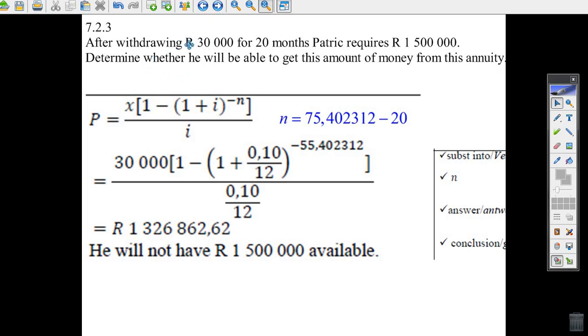They say after withdrawing 30,000 Rand for 20 months, Patrick requires a million and a half. Is he going to have that much money left if he's taken out 20 months? So what you need to find is what's the balance on the money left in the bank on the loan to himself? That's what P is. What's the balance going to be in there?